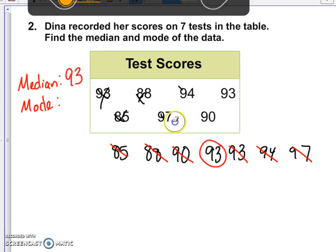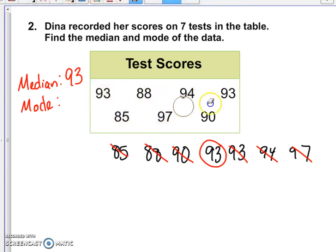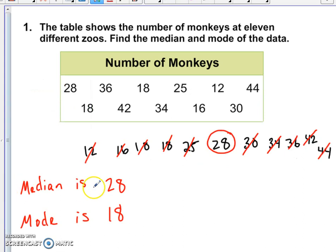Let's look for the mode. The mode is just the number that appears most frequently. It looks like we have one 93 there and another 93. None of the other numbers are the same. So 93 is our mode also. So for this example, you have a median and a mode that are both the same value. Let's go back to example one quickly. We see that the median is 28 and the mode is 18. So not always will you have the same value. Depends on your data.